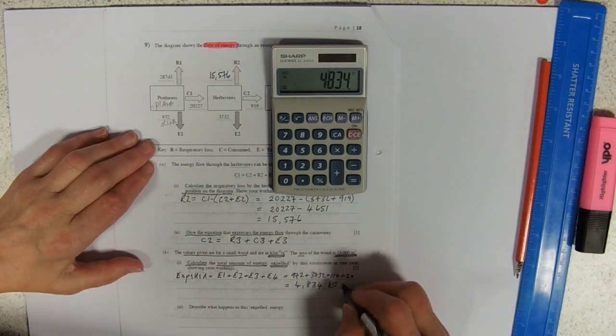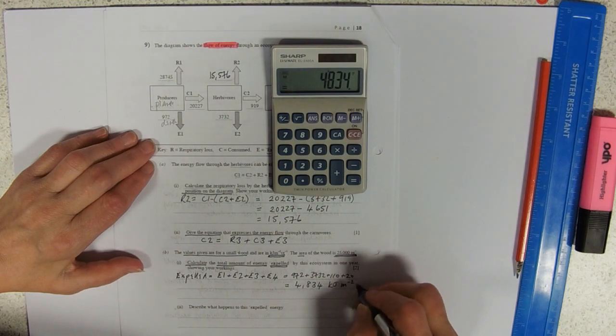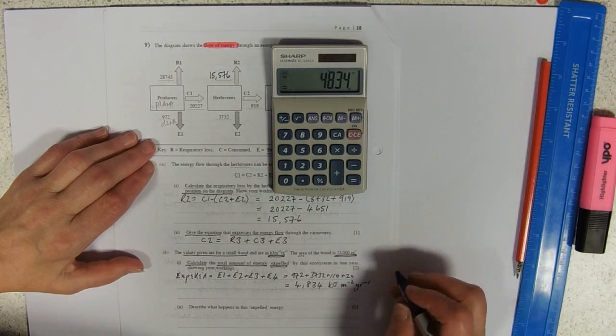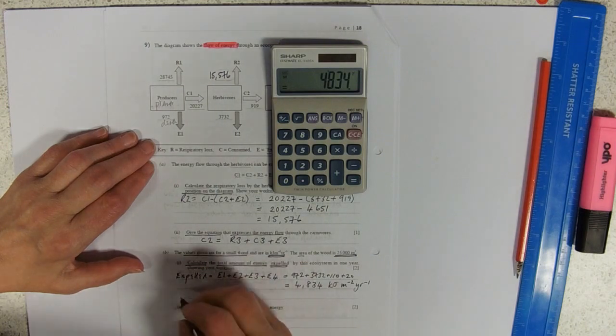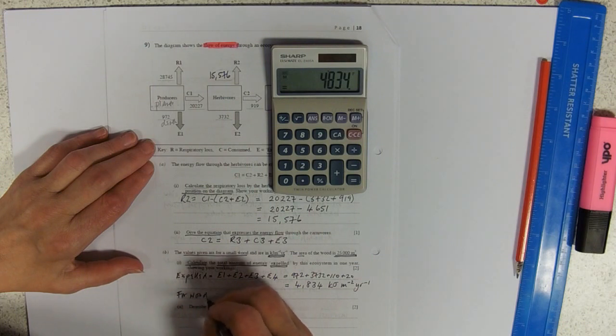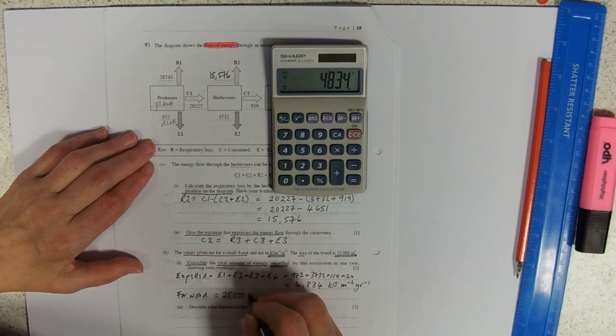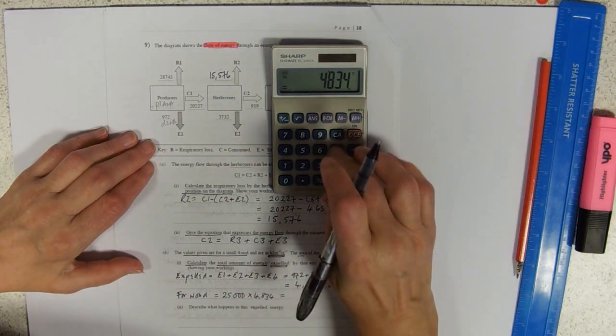...so for the wood would be 25,000 times 4,834. So times 25,000. Equals humongous number. Good lord.